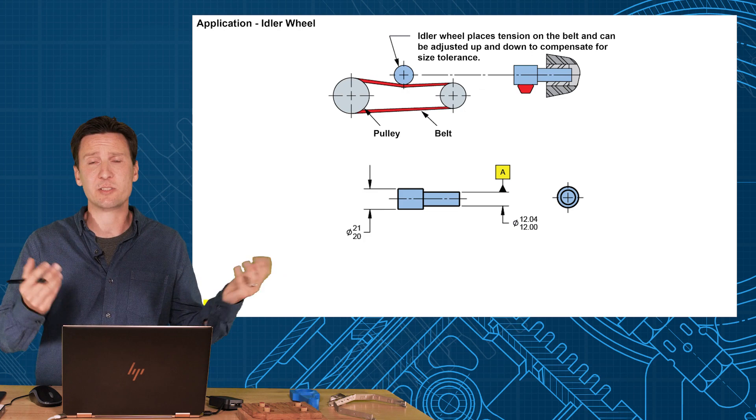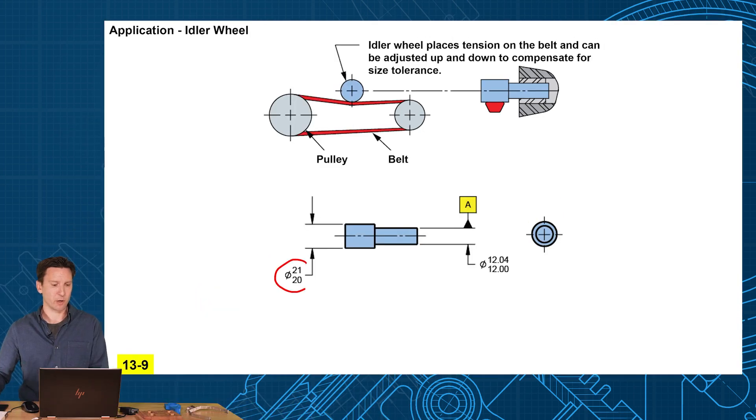Now one thing that was not important though is the size. The size was not important because the thing can be adjusted up and down to compensate for size. If you had a big wheel, just adjust it in a little more. If you have a small wheel, adjust it in a little less. No big deal with the size. So that's why I give it plus or minus half a millimeter. Don't really care about the size. But we do want it to be coaxial because if it's off center, it's going to wobble, and it's going to make our belt bounce and flutter.